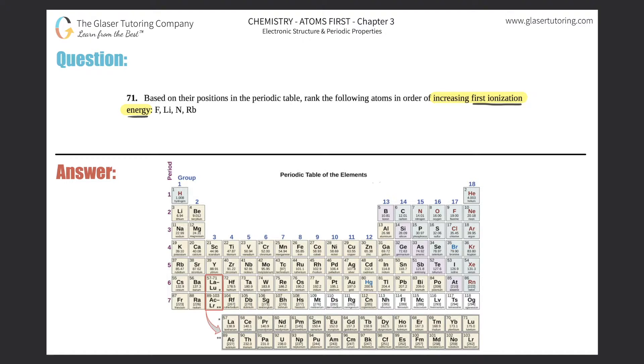Remember what ionization energy is - it's the energy needed to remove an electron. So when you remove an electron, that atom becomes a positive charge, aka it becomes a cation.